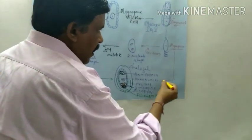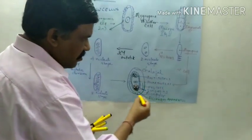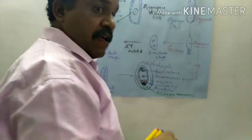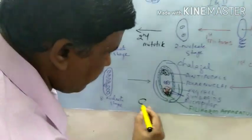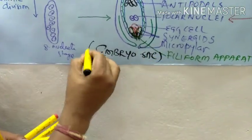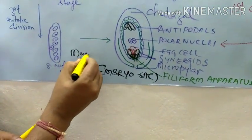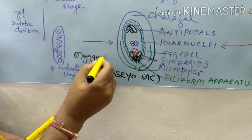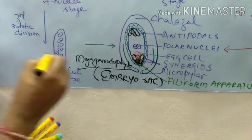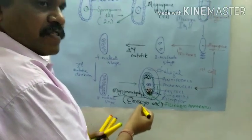This Megaspore is the first cell giving rise to this structure. What is the structure? That is your embryo sac. This embryo sac is what is known as your Megagametophyte. So this Megaspore develops the embryo sac.